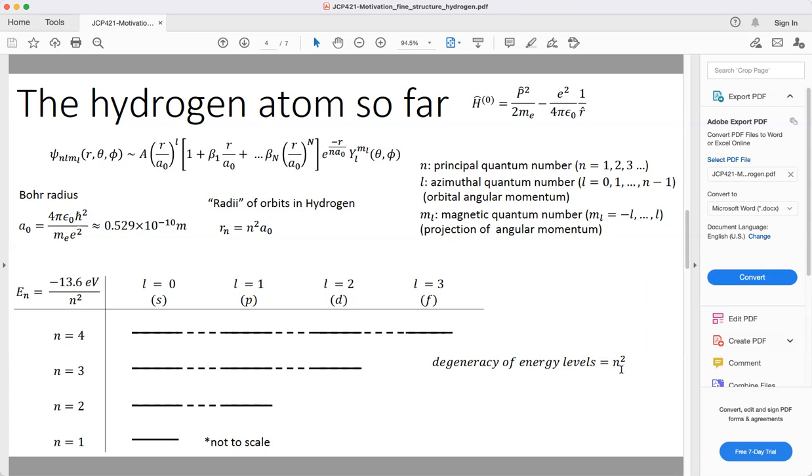For example, for the n equals two level, you have fourfold degeneracy. For the n equals three level, you have ninefold degeneracy, and so on. This degeneracy has to do with the values that the quantum numbers can take.